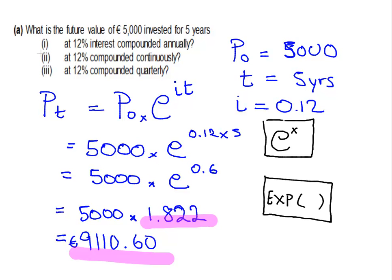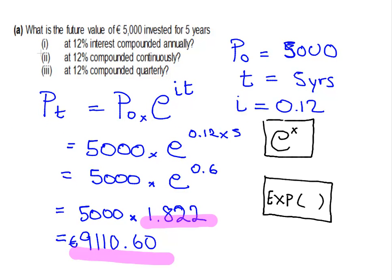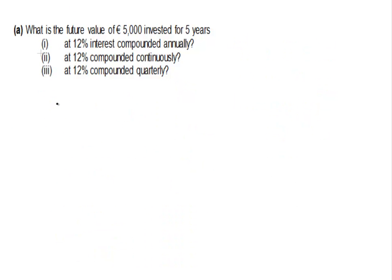The last part is when we compound quarterly. So we're going to go back. Let's go back here a second. We're going to use a formula like this one again. But we're going to change it slightly. Here we compound once a year. In the next case, we're going to compound several times a year. So there's a slightly different formula that we're going to use here.